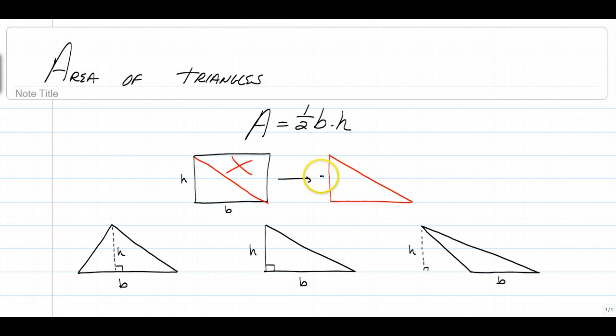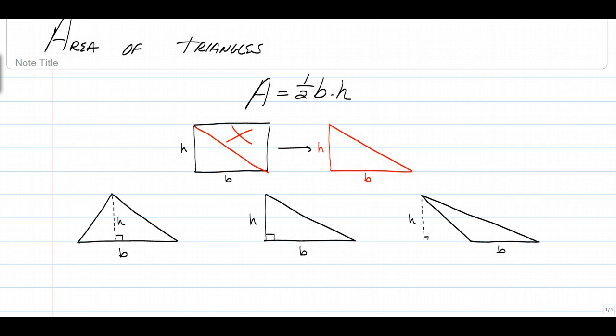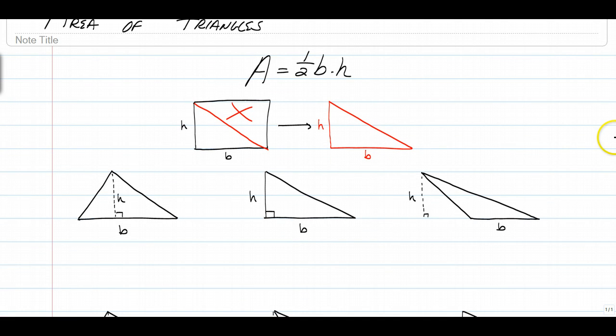So that's how we have half of the base times height, because if the area of a parallelogram is base times height, and we're just using half a parallelogram, simple. Half the base times height. Very similar to a parallelogram, your height must always be vertical, or perpendicular to the base.